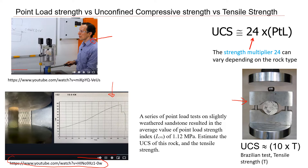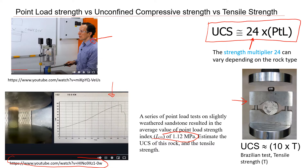I would like to show you how we can correlate data from three different tests. For example, if you know data from the point load test — in this example the point load index is 1.12 MPa — how can we estimate the unconfined compressive strength of this rock, and also the tensile strength? You just need to remember two formulas: this one is the correlation between UCS and point load index.